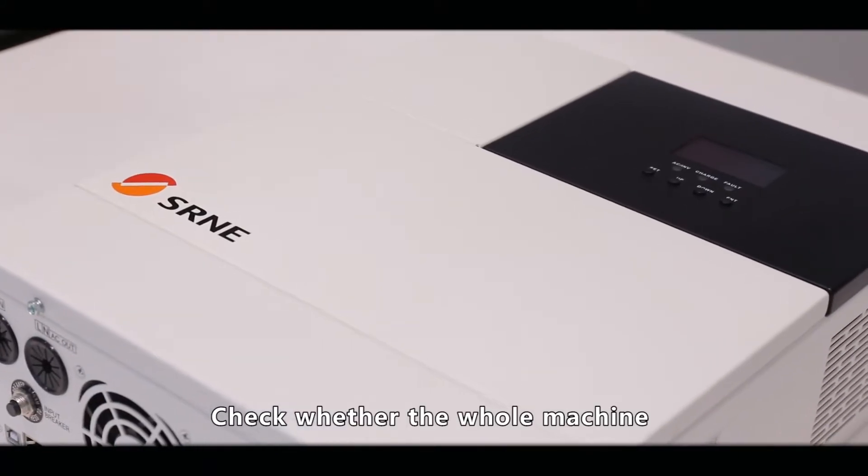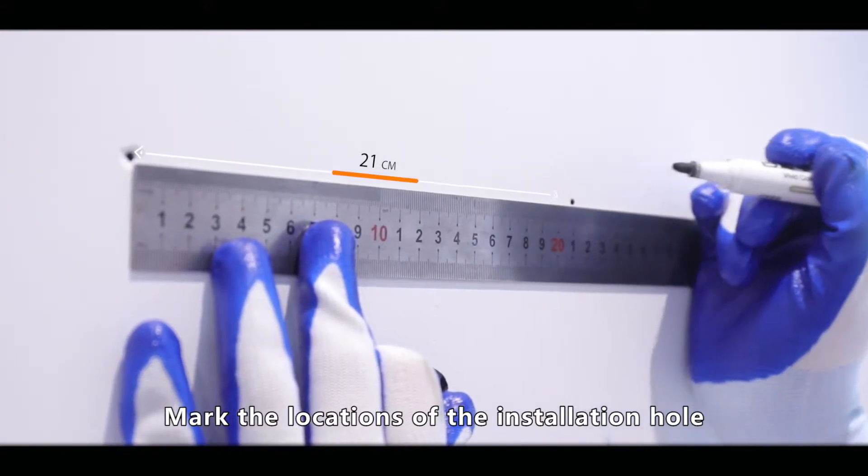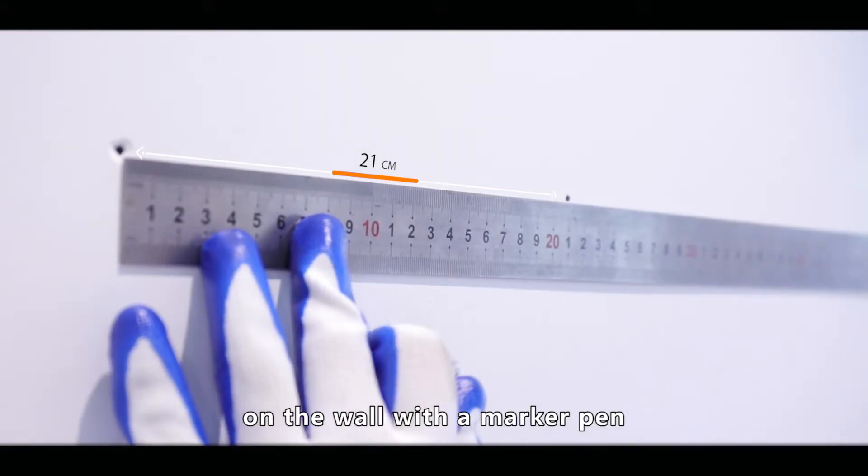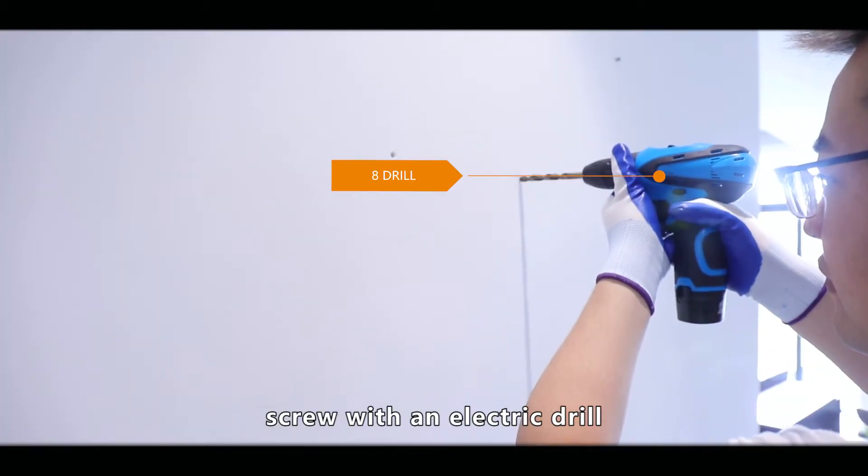Check whether the whole machine is in good condition before assembling. Mark the locations of the installation hole on the wall with a marker pen. Drill the bottom hole of the expansion crew with electric drill.